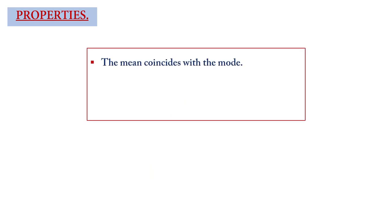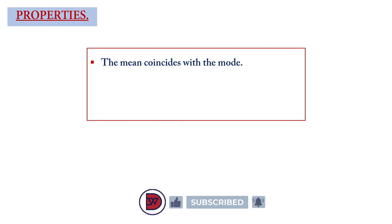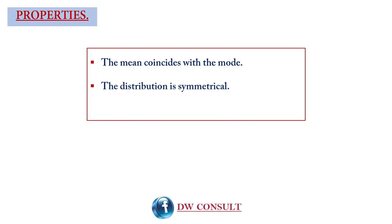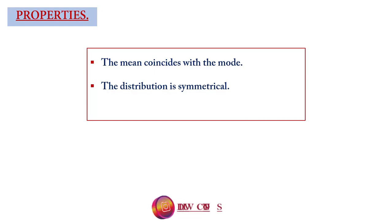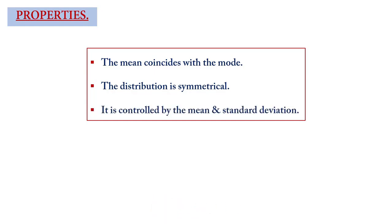The properties of normal distribution are: one, the mean which is the average coincides with the mode — the mode is the outcome with the highest number of occurrences. The distribution is symmetrical, meaning the space to both the left and the right of the mean are equal. It is controlled by the mean and standard deviation, as we will see when we start solving questions.